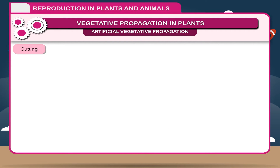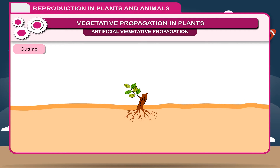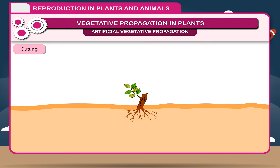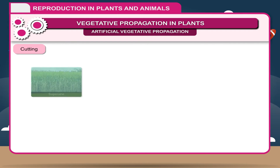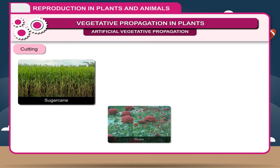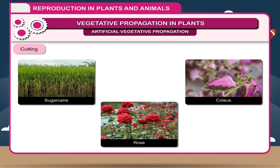Cutting. Cutting is the most frequently used and easiest method to propagate plants. In this method, parts of the plant are cut and planted into the soil. Cuttings may be selected from the root, stem or leaf. For example, sugarcane, rose, coleus, etc.